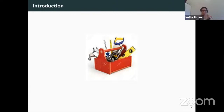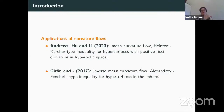Here are some applications of curvature flows in the proof of geometric inequalities. In 2020, Andrews, Wu, and Li used the mean curvature flow to prove a Minkowski-type inequality for hypersurfaces with positive mean curvature in hyperbolic space.